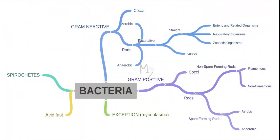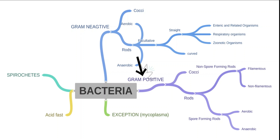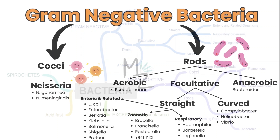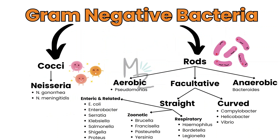Before talking about Bordetella Pertussis in detail, we should know how bacteria are classified. Bacteria are further classified into spirochetes, acid-fast, and there's an exception — mycoplasma bacterium. Bacteria are also classified on the basis of Gram staining into Gram-positive — we're done with all of them, be sure to check out the channel — and into Gram-negative. Gram-negative are further subdivided into cocci like Neisseria, and also into rods.